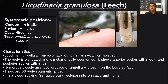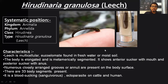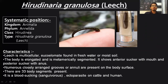Characteristics: the leech is a multicellular, eucoelomate animal found in fresh water or moist soil. The body is elongated and metamerically segmented with equal-sized segments called metamers. It shows an anterior sucker with mouth and a posterior sucker with anus. Numerous closely arranged grooves or annuli are present on the body surface. There are 33 body segments. These organisms are blood-sucking ectoparasites and since they are blood-sucking, they are called sanguivorous animals — usually ectoparasites of cattle and humans.